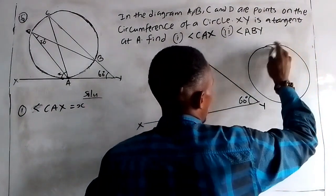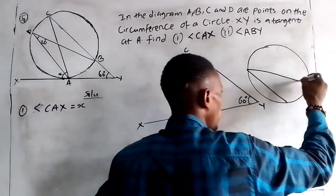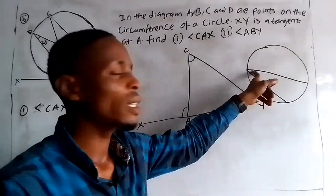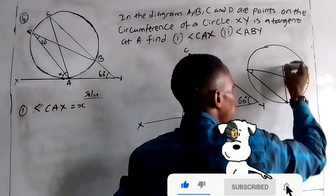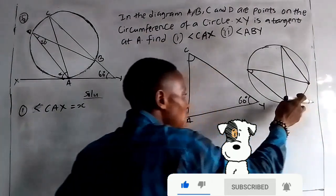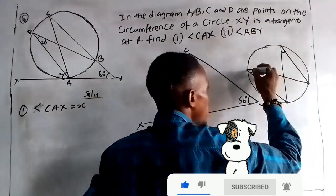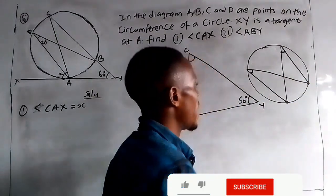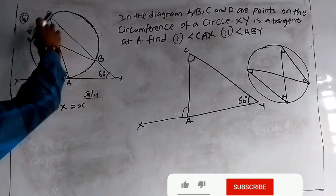When you have a circle and a chord, the angle formed by a chord at one point, and the angle formed by another chord starting and ending at the same two points — both angles are equal. That is the angle in the same segment. So applying that here, the angle here is equal to the angle here because they start and end at the same points on the circle.